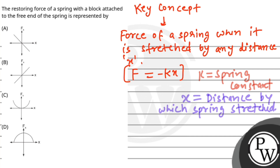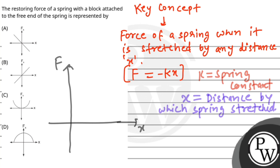Now, we have to plot a graph where f denotes force and x is the distance. We know that f is equal to minus kx. Since k is constant, this implies that f is directly proportional to minus x. When two things are directly proportional, we get a straight line graph.